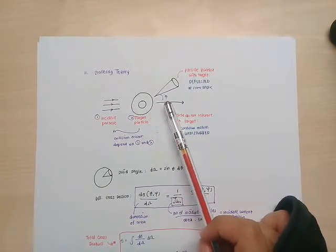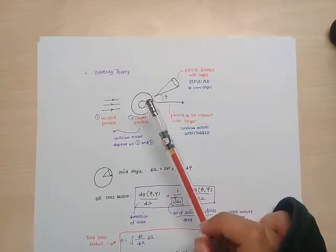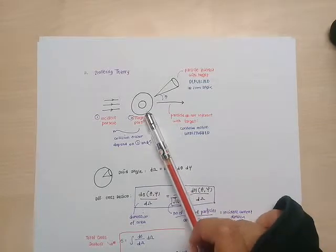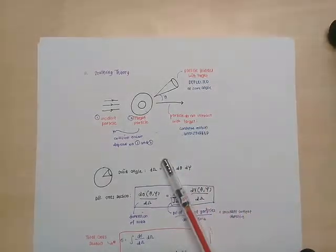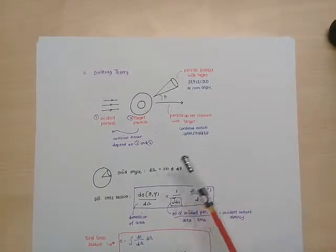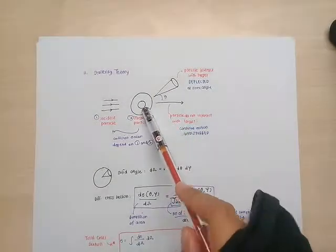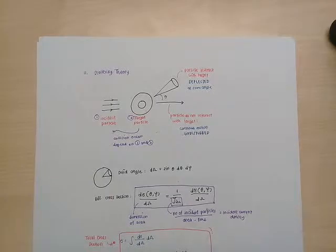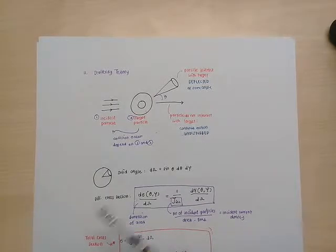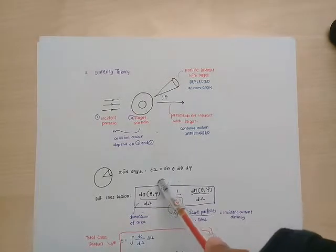This is what happens in the scattering experiment. This deflection occurs because the target particle is solid physical matter. The solid angle can be calculated like this, and the differential cross-section can be calculated as shown.